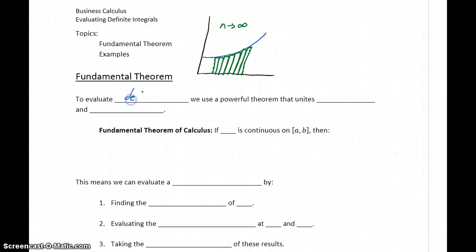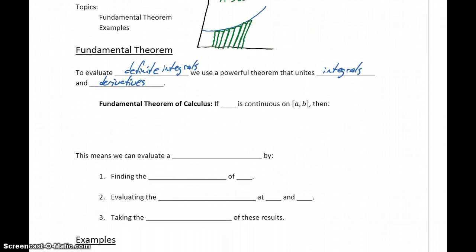So to evaluate definite integrals, we're going to use this theorem that is going to unite integrals and derivatives. So if some function f of x is continuous on a closed interval from a to b, then we can evaluate the definite integral of that function, evaluated from a to b, as capital F of b minus capital F of a, where capital F is the antiderivative of lowercase f.